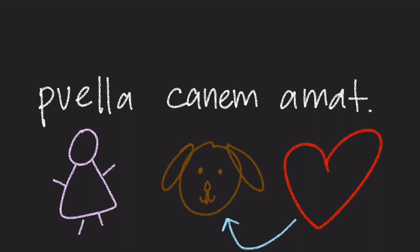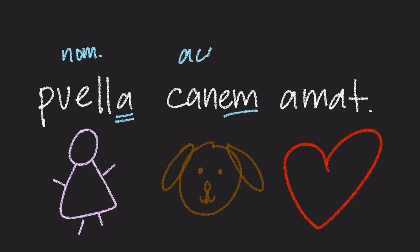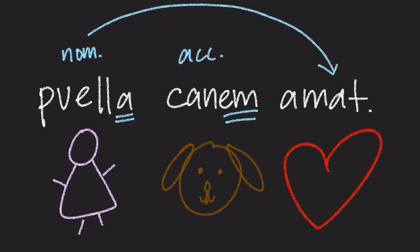Kanem is in the accusative case, which means that instead of doing the action, Kanem is receiving the action. Puella ends in a short A, which means she is in the nominative case and she is doing the action, which in this sentence is Amat. The girl loves the dog.